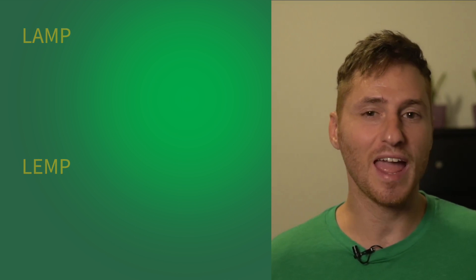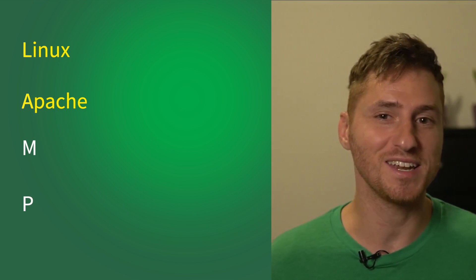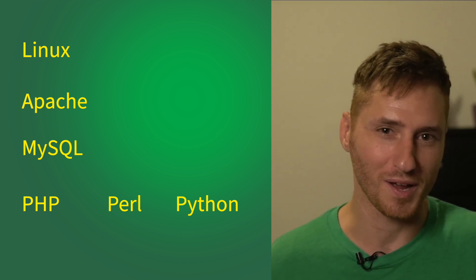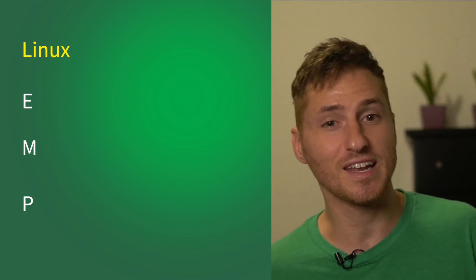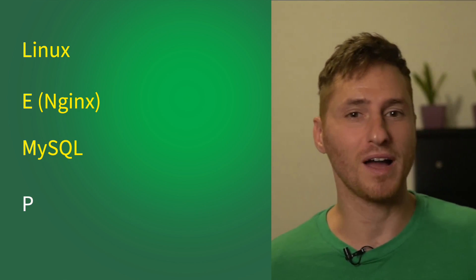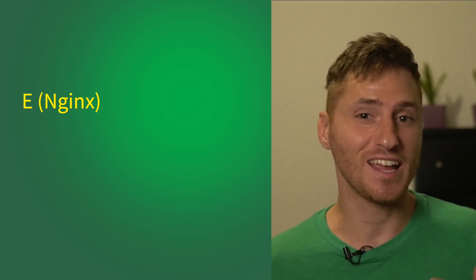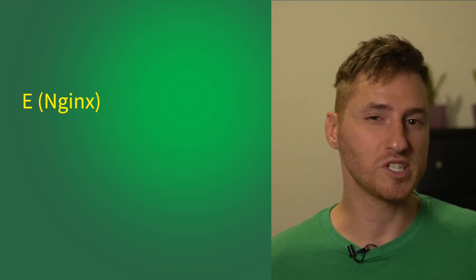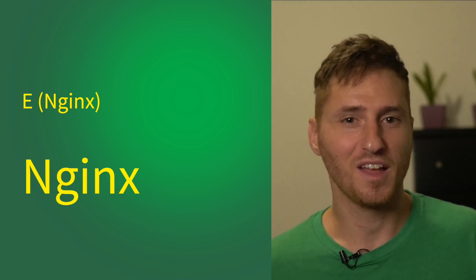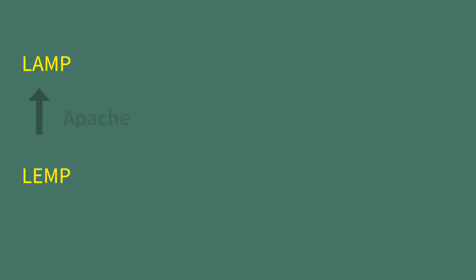Now let's look at the LAMP and LEMP stacks. LAMP means Linux, Apache, MySQL, and either PHP, Perl, or Python. LEMP means Linux, NGINX, MySQL, and either PHP, Perl, or Python. Take note that the E stands for NGINX, which is spelled like this. The difference between LAMP and LEMP is whether you prefer Apache or NGINX.